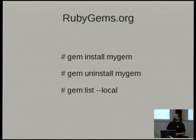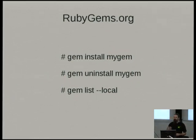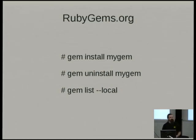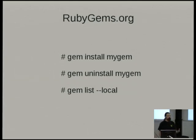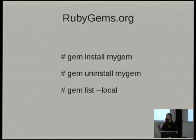Then we've got RubyGems, which is a packaging system for Ruby bits and pieces. You might think of it as being like CPAN for Perl, EasyInstall for the Python package index, or Node.js's NPM. There's RubyGems.org where all the gems are hosted, and a command line tool where you run 'gem install something' to install that gem on your system, or uninstall, or list whatever's there. There's also commands for creating your own gems.